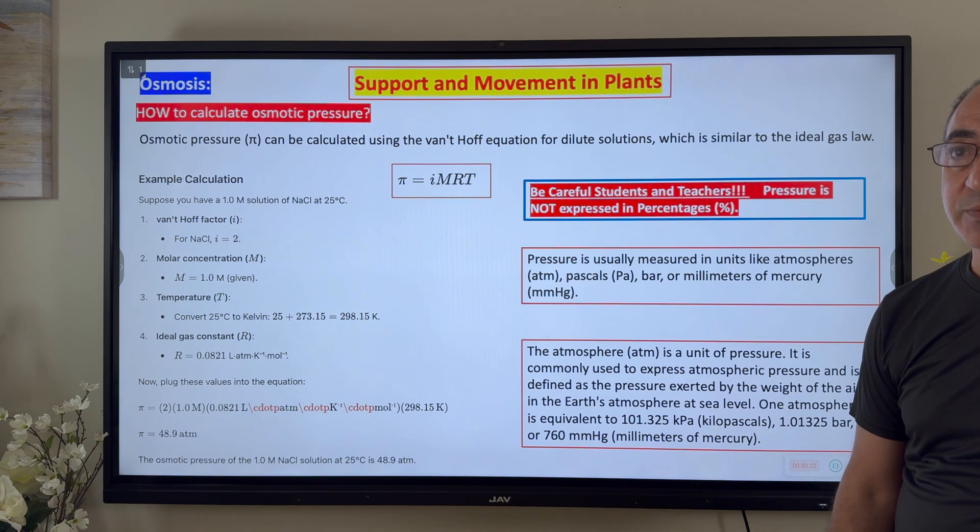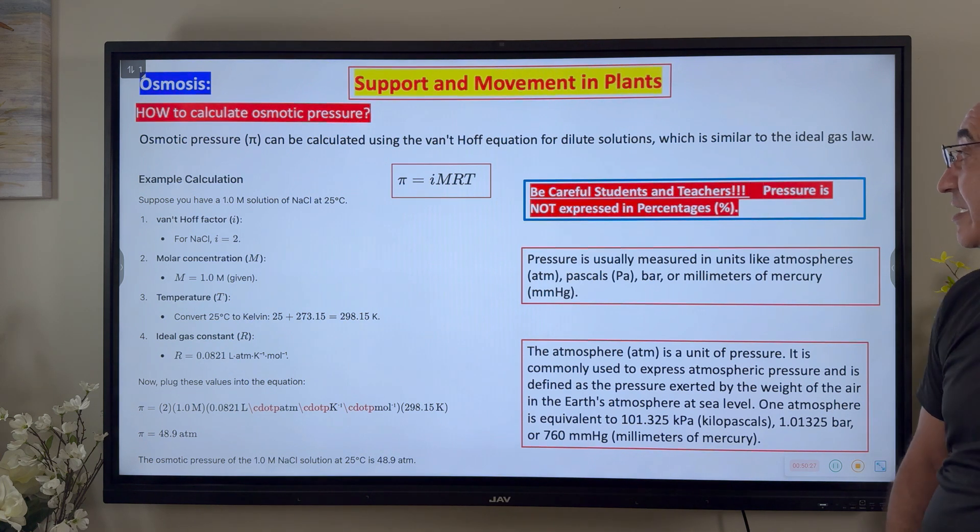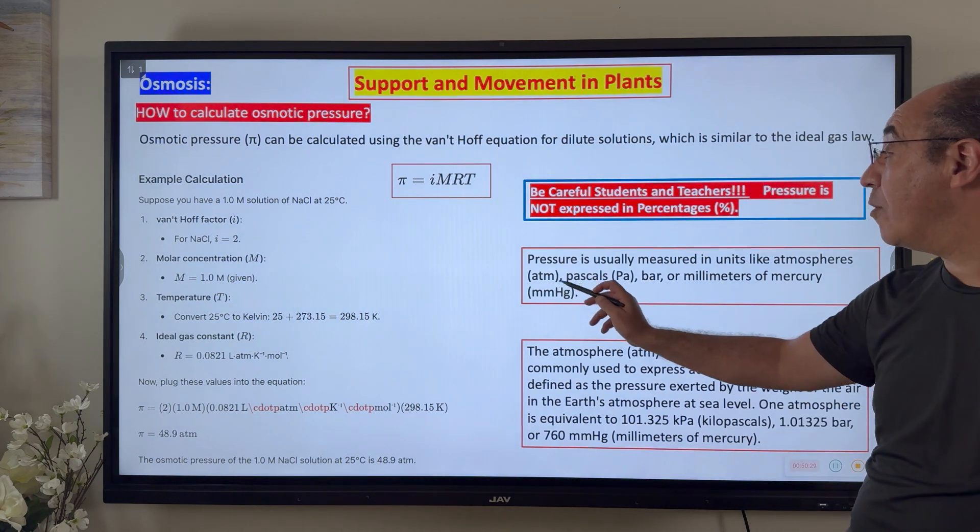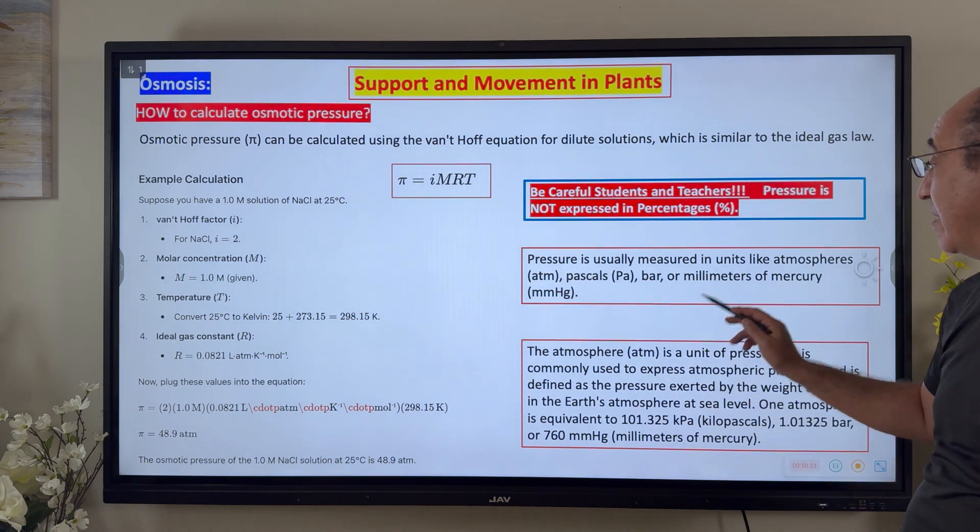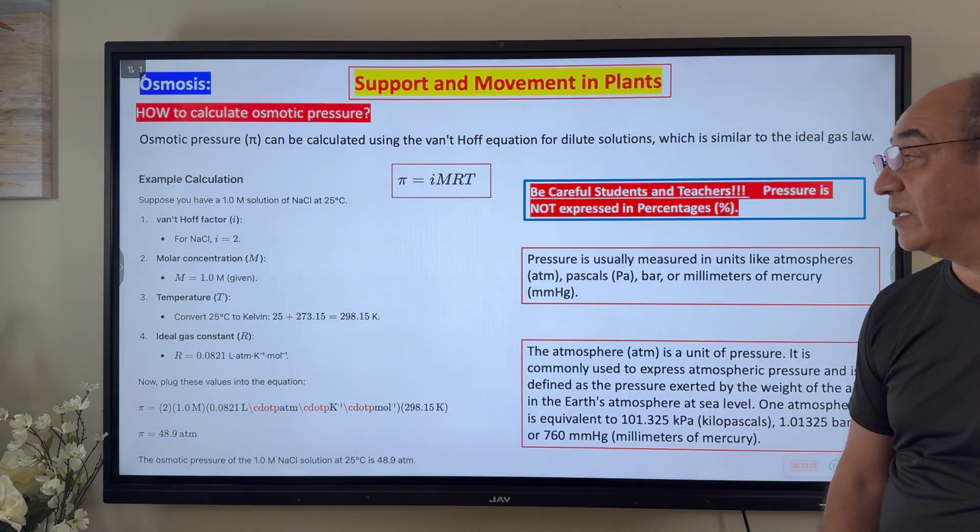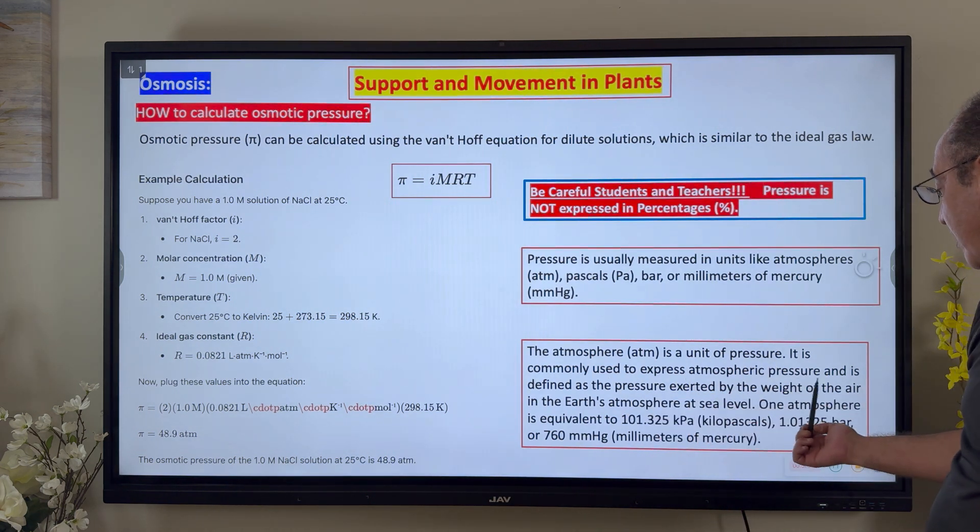Pressure is not expressed as grams per mils. It's not expressed in kelvins. It's expressed in atmosphere, or pascals, or in bar, or in millimeters of mercury, if you were talking about gas or fluid. So it's a unit of pressure. It is commonly used to express atmospheric pressure.